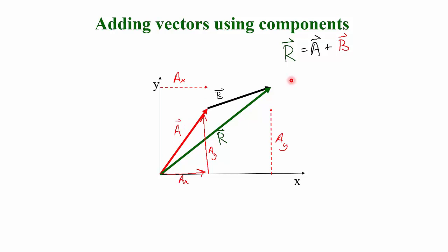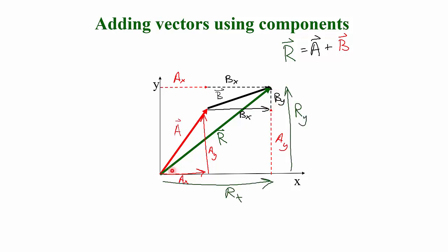I can take vector A and break it into X and Y components. The X component of vector A points to the right, and the Y component points up. I can do the same thing with vector B — find the X component and the Y component of vector B. The X component of the resultant vector is the X components of vectors A and B added together.